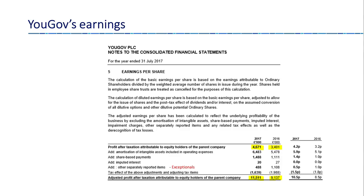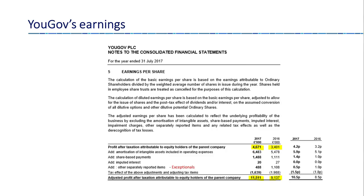That equates to 4.2p of earnings per share — quite steep when one looks at the share price, which is 318p. The way YouGov argue it is to add back to that reported number various costs. The first one being amortisation — they add the whole lot back: £6.5 million. Of that £6.5 million, just £1 million arose from acquisitions. But the remainder arose from writing off money previously spent on software development and on the consumer panel, and that to me feels like a real and genuine cost of the business. I cannot see how you can add that back to your profit number.